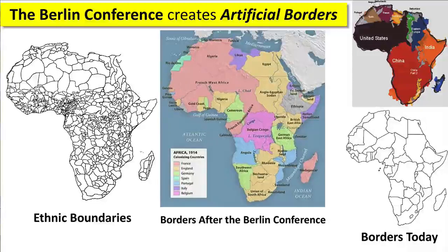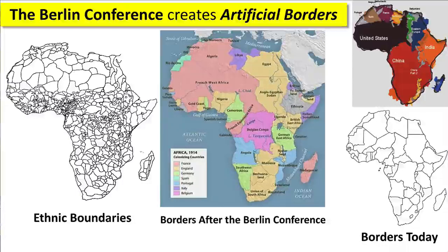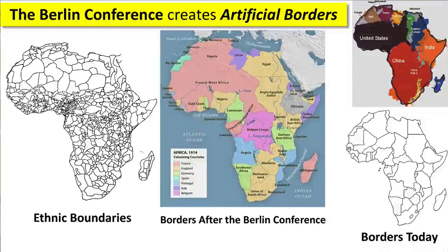You can see that the ethnic boundaries on the left look very different from the borders today, shown in the picture at the bottom right. The borders today have more in common with the borders set up after the Berlin Conference than they do with ethnic groups. That's had a lot of long-term consequences, because when you shove different people together in one country, you're not going to have the same social cohesion — people aren't going to want to live together in peace and harmony, and that's had long-term consequences in Africa.